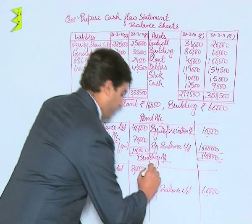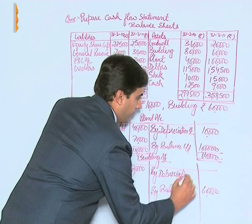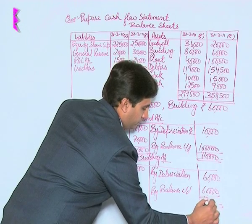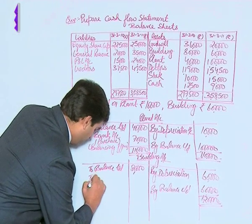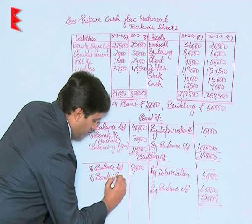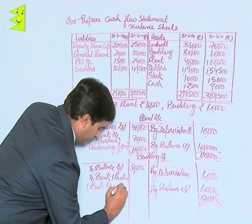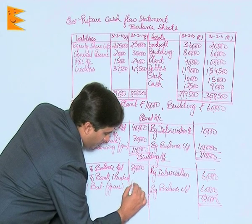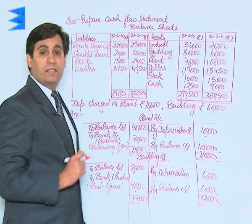The entry for depreciation would be depreciation to building, so on the credit side of the building account we write: by depreciation 60,000. The total is 1,20,000. Out of this 1,20,000 we deduct 80,000, and we get the balancing figure as purchase of building during the year — written as to bank — which is 1,20,000 minus 80,000, coming to 40,000.